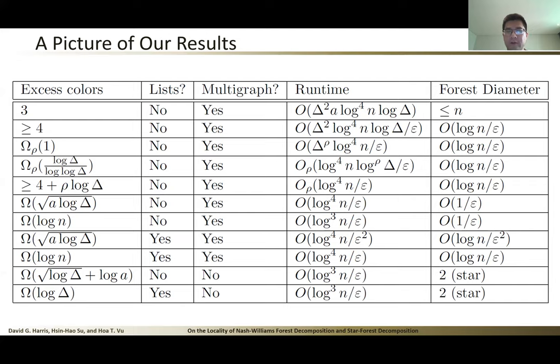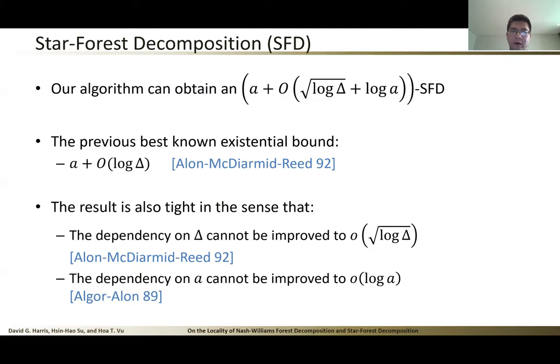We consider the combinations of these objectives. Here is the comprehensive picture of our results. One data point of particular interest is the last two rows, which are the star forest decomposition problem. Our algorithm can get a + √Δ + log a star forest decomposition. This actually improves the previously best known existential bound by Alon et al. The result is also tight in the sense that the dependency on Δ cannot be improved, and the dependency on a cannot be improved either.